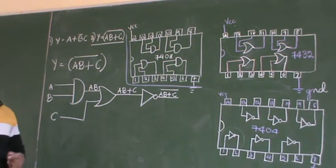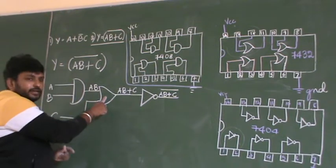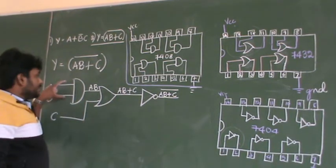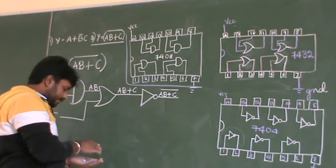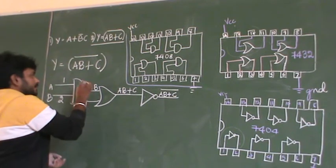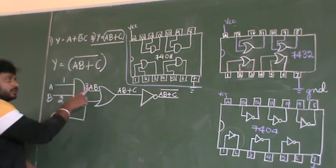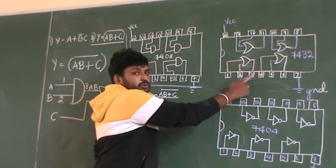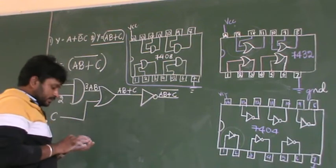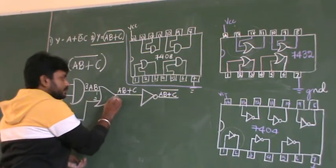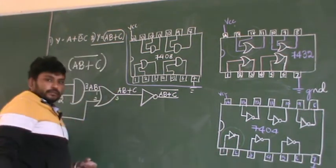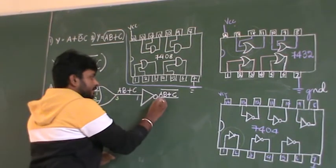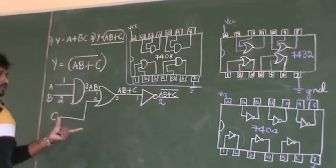There are 3 gates total: only 1 AND gate, 1 OR gate, and 1 NOT gate. For the AND gate, I choose the first one: inputs are pin 1 and 2, output is pin 3. For the OR gate, using a different color: inputs are pin 1 and 2, output is pin 3. For the NOT gate, using another color: input is pin 1 and output is pin 2. I hope you have understood how to write the pin numbers.